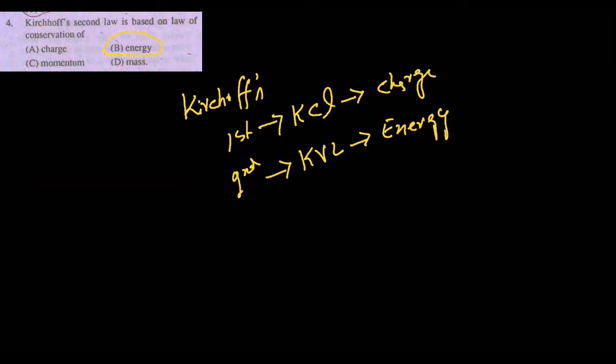Next MCQ: the diameter of the nucleus of an atom is of the order of — 10⁻³¹ m, 10⁻²⁵ m, or 10⁻¹⁴ m? The diameter of the nucleus is 10⁻¹⁴ meter. So option C is the correct answer.